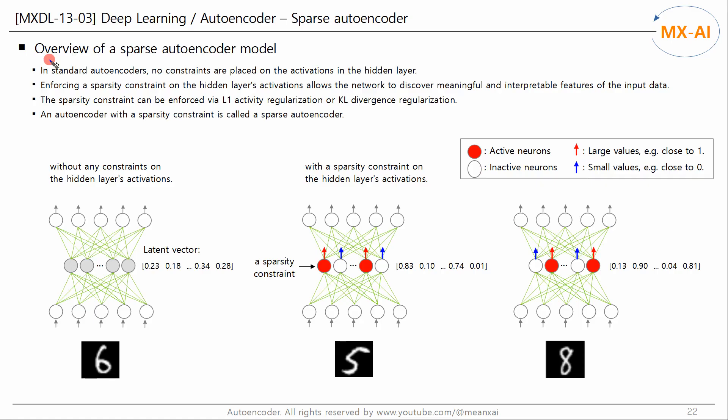Now let's take a look at an overview of a sparse autoencoder. On the left is a simple autoencoder. In standard autoencoders, no constraints are placed on the activations in the hidden layer. Let's assume that the output vector of the encoder for some input is as follows. Just looking at this vector, we cannot guess what the input data looks like. That is, latent vectors are not easily interpretable.